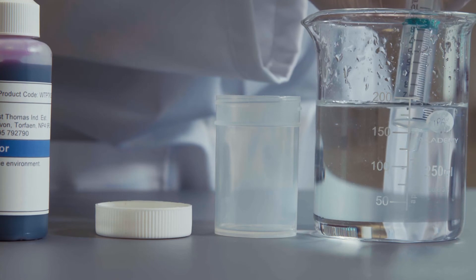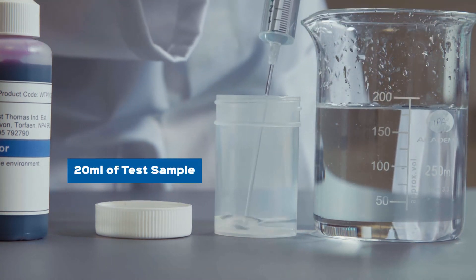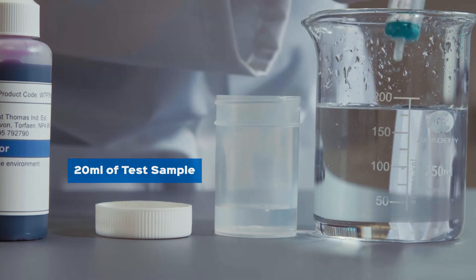Using the 10 milliliter syringe, transfer 20 milliliters of sample to the sample pot. This allows you to precisely measure the amount of sample required for testing.